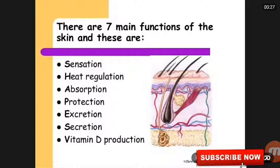Number two is heat regulation. The skin plays an important role in regulation of body temperature. Excessive heat is lost from the body through the skin by radiation, and sweat glands of the skin take an active role in heat loss by secreting sweat.